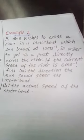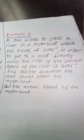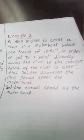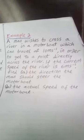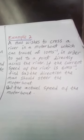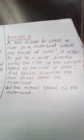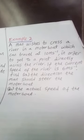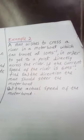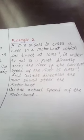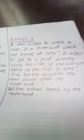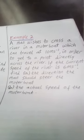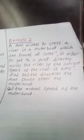Example 2. It says a man wishes to cross a river in a motorboat which can travel at 10 meters per second in order to get to a point directly across the river. If the current speed of the river is 6 meters per second, find (a) the direction the man should steer the motorboat, and (b) the actual speed of the motorboat. I will leave this as an assignment and perhaps in the next class, I'm going to treat it. Thank you and do have a nice day.